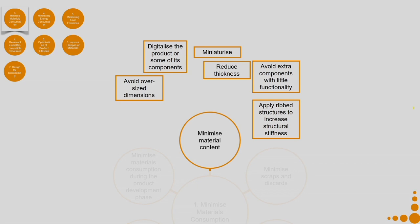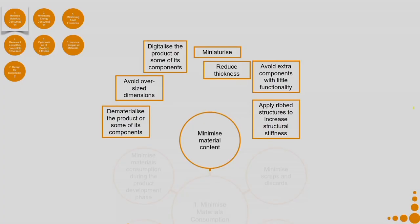You can apply ribbed structures to increase structural strength. For example, a smaller knob with ribs gives better grip and allows more force than a flat surface while minimizing material usage. You can also dematerialize the product or some of its components — that is, remove material from there.